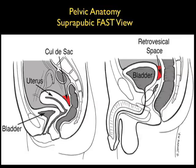In the male pelvis, small amounts of fluid will only be found in the retrovesical space behind the bladder. As the amount of fluid enlarges it will come anterior to settle out over the top of the dome of the bladder, but small amounts of fluid will only be found in that retrovesical space immediately posterior to the bladder.